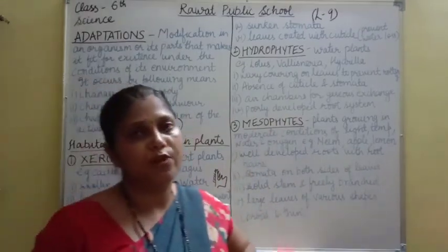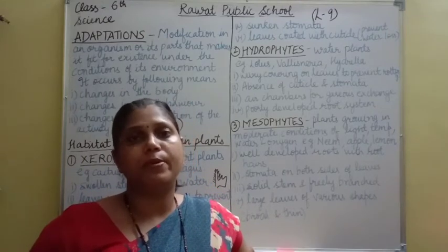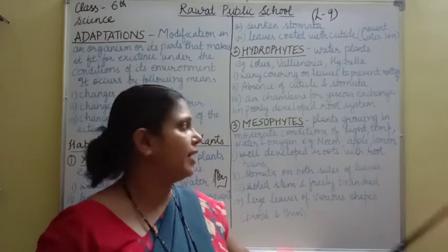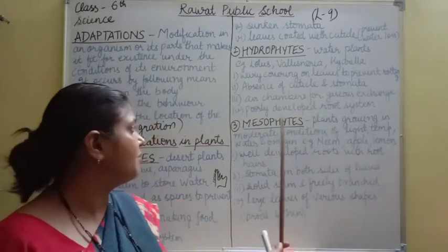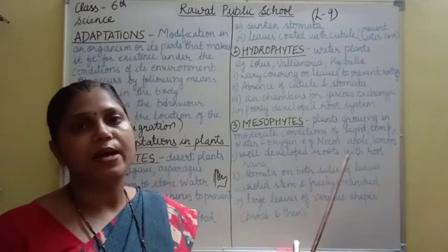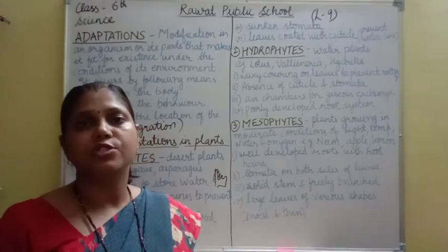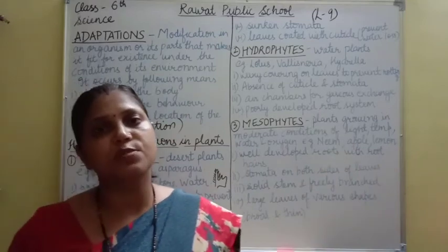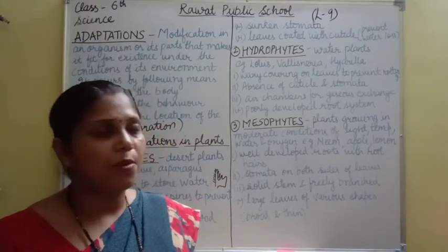Now coming to the mesophytes. Mesophytes are plants that grow in optimal conditions — meaning moderate conditions of light, temperature, water, and oxygen. Mostly common plants are mesophytic plants, such as neem, apple, lemon, and orange. All these plants are mesophytic because they get all things properly — light, water, and temperature.